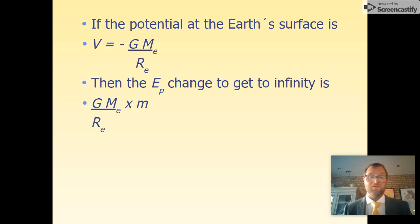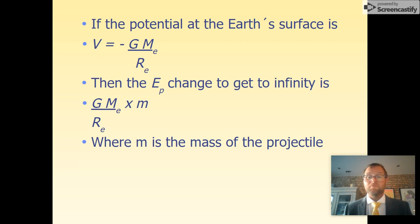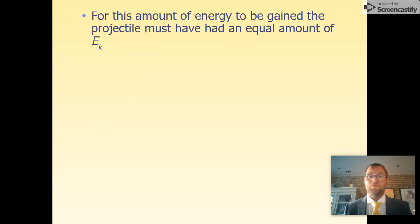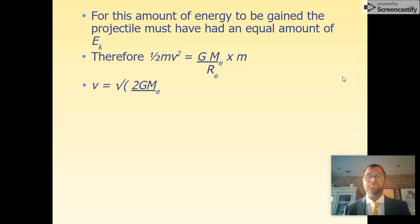If we're moving an object where m is the mass of the projectile, for the amount of energy to be gained, the projectile must have an equal amount of kinetic energy. Therefore, ½mv² equals the amount of energy required to escape the potential. Here I can rearrange for v.